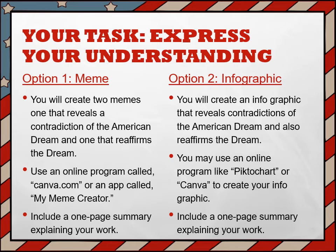Option number one: Meme. You will create two memes — one that reveals a contradiction of the American Dream and one that reaffirms the dream. Use an online program called Canva or an app called My Meme Creator to complete your work. Include a one-page summary explaining your work.